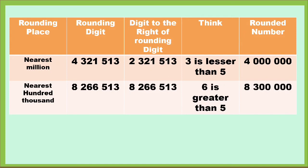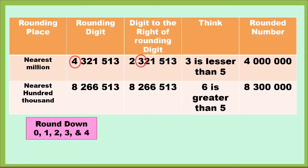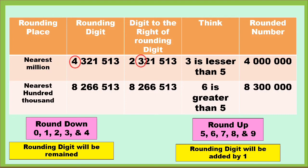Another example: 4,321,513. We're going to round it off to the nearest million. First, find the rounding digit — the rounding digit is 4, in the millions place. Then find the digit to the right of 4, which is 3. Alamin natin kung ang 3 ay nasa round down or round up — 3 is in the round down digits, so the rounding digit will remain. So ang 4 ay manatiling 4, at lahat ng nasa right side ng 4 ay magiging zero. Our answer is four million.